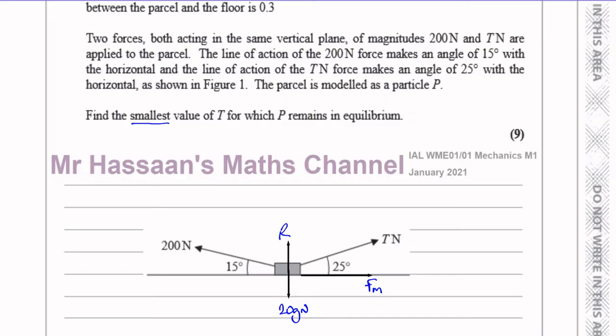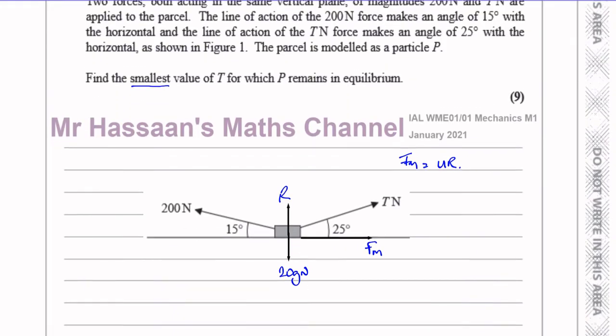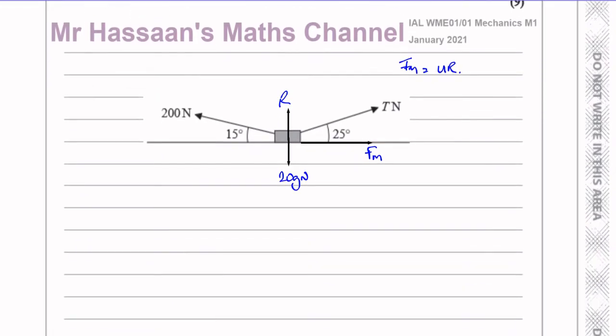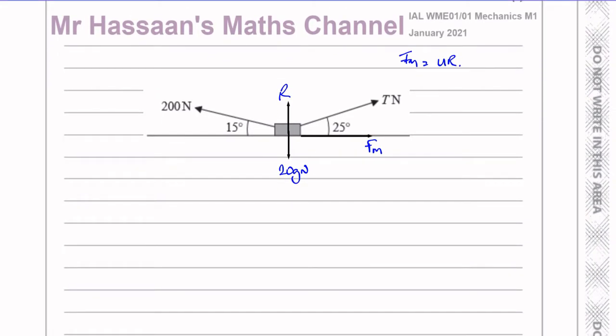So we know F_max has been achieved because the parcel is on the verge of sliding. That's the smallest value of T — it's just about to slide and the tension is stopping it. F_max is equal to μR. So now let's start resolving forces so we can find T.